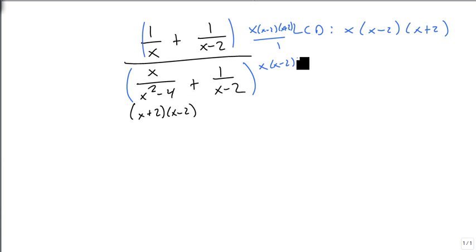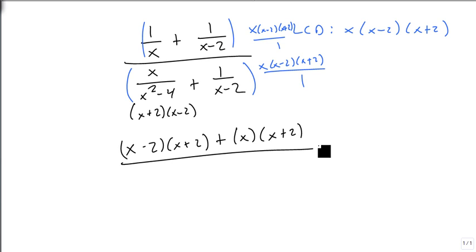And there's a shortcut here, where all we really need to write is what's left over. So this is x minus 2 times x plus 2, plus x times x plus 2, over x times x plus x times x plus 2.